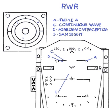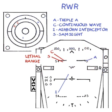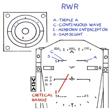The length of the vectors indicates strength and corresponds to the threat bands in the azimuth display. A short trailing vector means the contact strength indicates it is probably non-lethal. A vector of middle length indicates it is probably tracking you and is therefore a lethal threat. A contact in the critical range will have the longest vector and probably means it has a lock on you and is preparing to fire a missile.